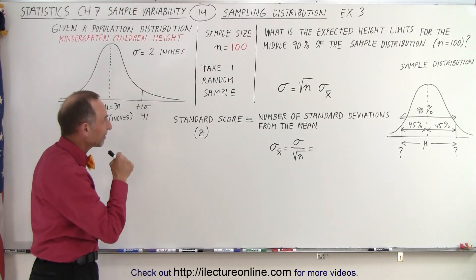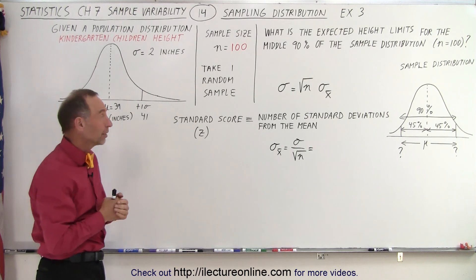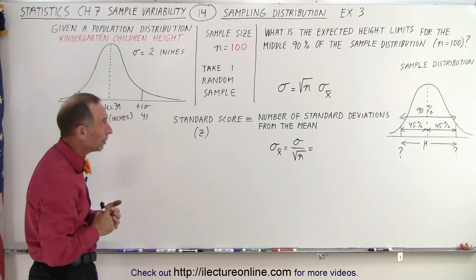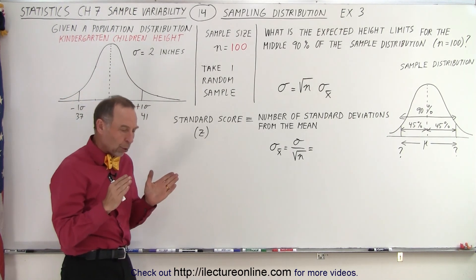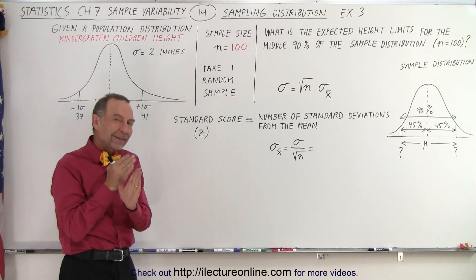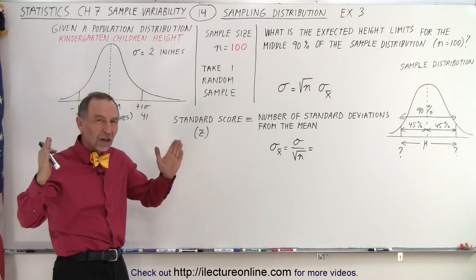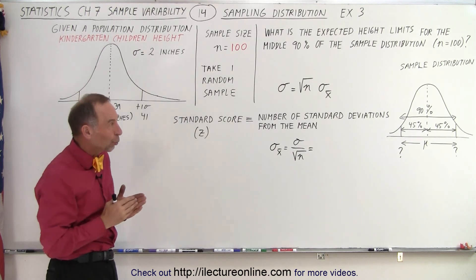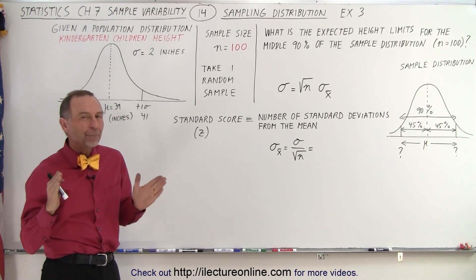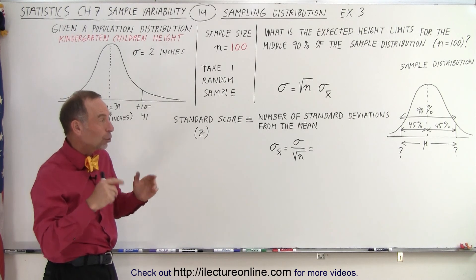Now let's say that we take a sample size of 100 kindergarten children, just one sample, and we want to know where the average of that one sample will fall and what will be the limits between where that average will fall if we want 90% probability that will be between those two limits.